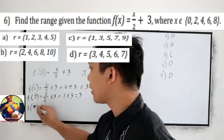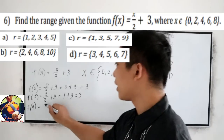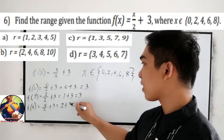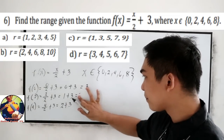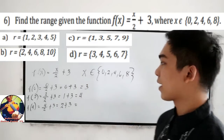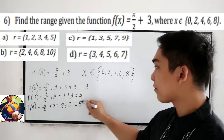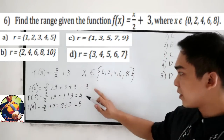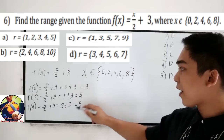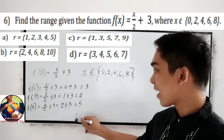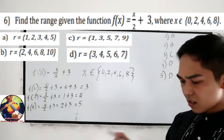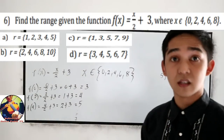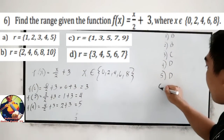F(4) = 4/2 + 3 = 2 + 3 = 5. Notice the pattern — F(6) gives 6 and F(8) gives 7. So the range is {3, 4, 5, 6, 7}, which is letter D. So number 6 is letter D.